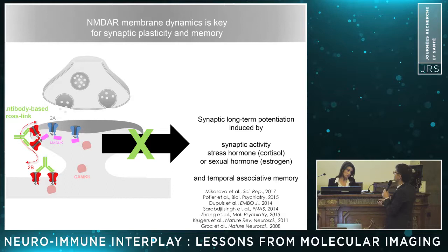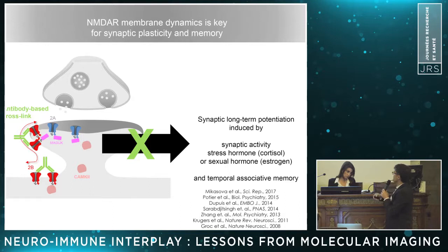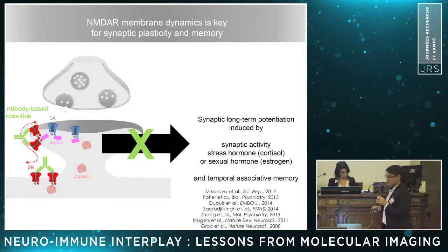More interestingly from a functional standpoint, we actually find that if you specifically prevent the fast dynamic or fast redistribution of a given subtype of the NMDA receptor, you completely prevent long-term potentiation of glutamate synapses, which is one of the features for synaptic plasticity that can be triggered by synaptic activity, stress hormones, or sexual hormones. Not surprisingly, if you impair that just by freezing the receptor — leaving their ionotropic function absolutely intact — then you obviously impact NMDA receptor-dependent functions such as associative memories.